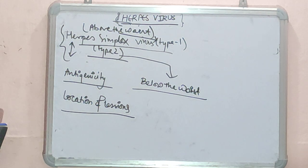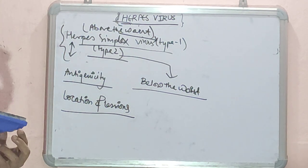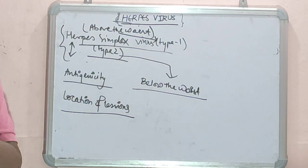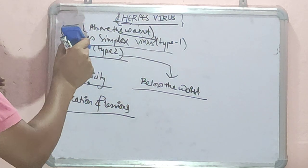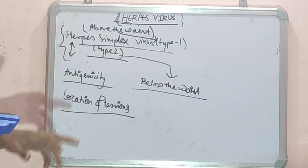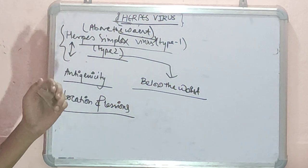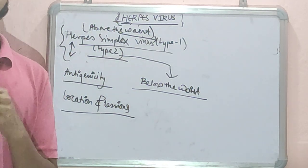These are some of the basic important classifications of Herpes Virus that you need to know — eight types of Herpes Viruses, classification based on biological types, and the location for HSV Type 1 above the waist and Type 2 below the waist. Thanks for watching. Keep watching. Thank you.